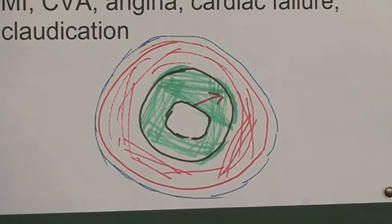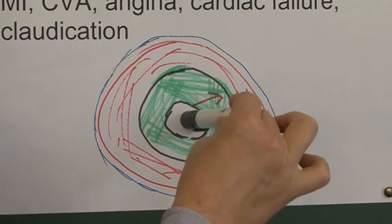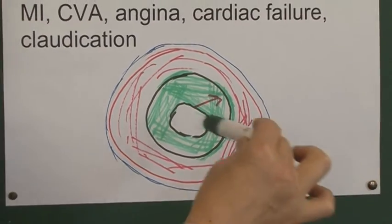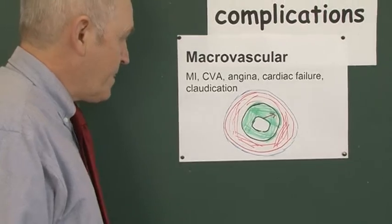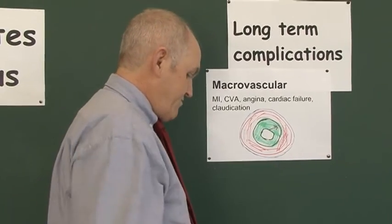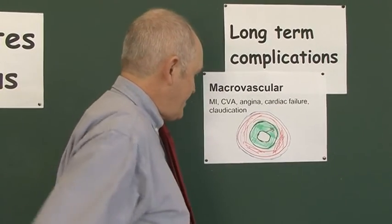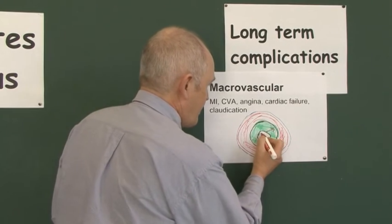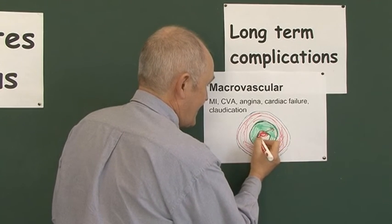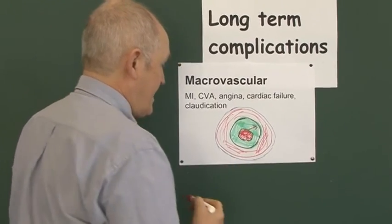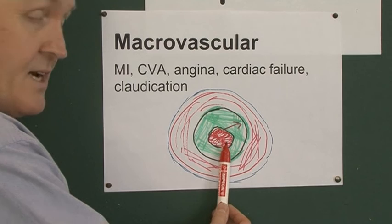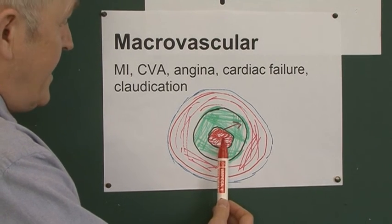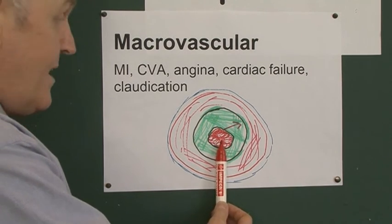This atheroma is associated with complications we've looked at in other videos. It's associated with ischemia, with increased risk of thrombus formation, and with aneurysm. The already-narrowed lumen leads to ischemic changes in distal tissues. Thrombus formation can then come along as well and completely block off an arterial branch, leading to distal infarction such as myocardial infarction or cerebrovascular infarction, causing a cerebrovascular accident.